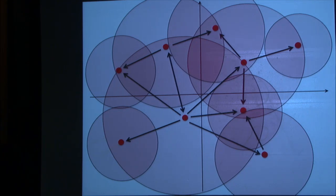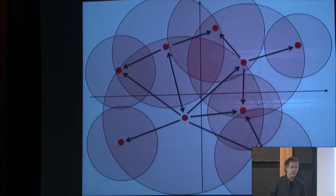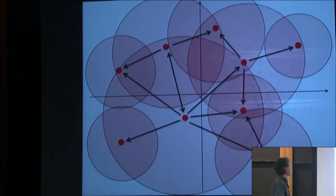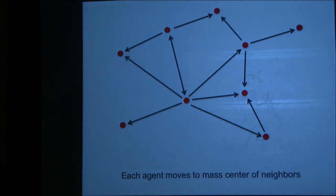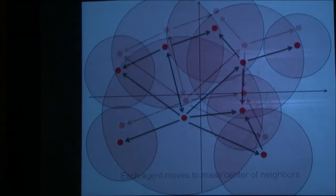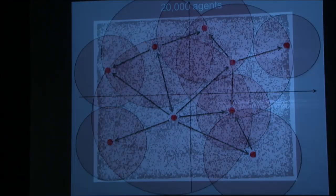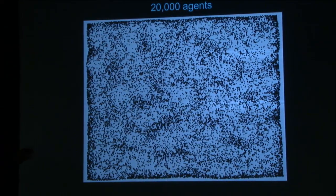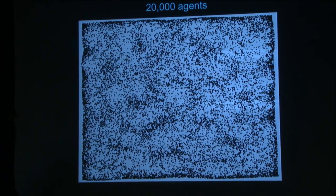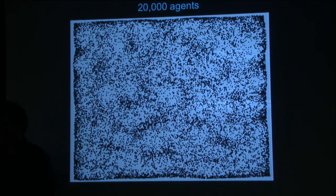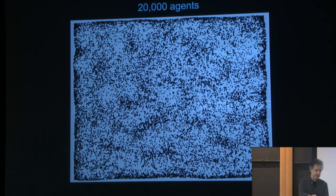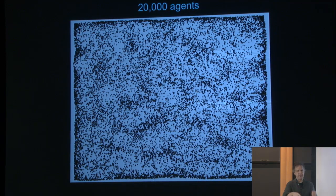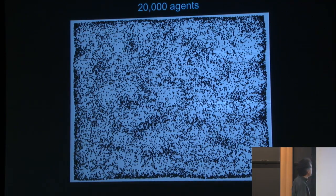Simulations show that this always converges to a fixed point, but somehow we have not been able to prove that. When all the radii are the same, we can do things, because the graph is symmetric — they have the same radii. So good things happen.